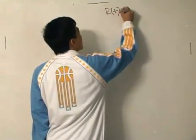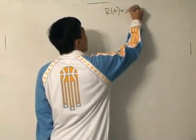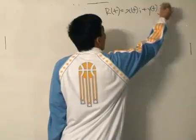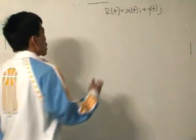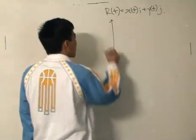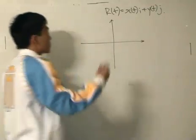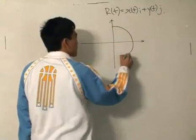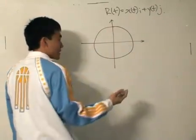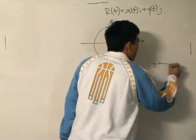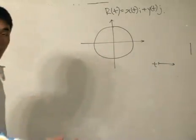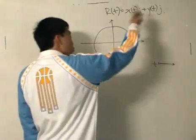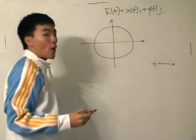The position vector r(t) equals x(t)i plus y(t)j. This is a position vector, and the position vector generates a curve. The curve goes like this, and t is the parameter. As t varies, we paint out the curve using the position vector from the origin to a point on the curve.